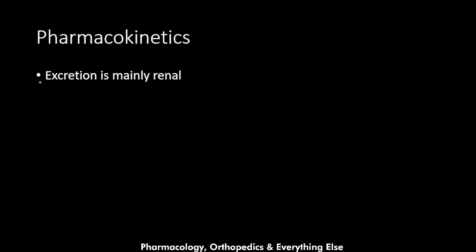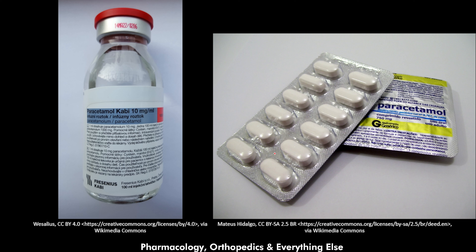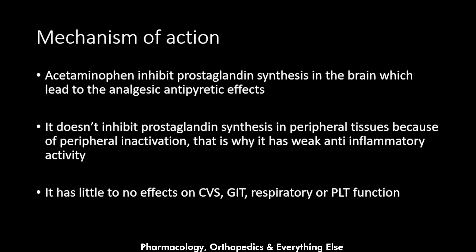Excretion of acetaminophen is mainly renal, through urine. We have pictures showing the different formulations — oral formula on the right and the intravenous vial on the left. Now for the mechanism of action: acetaminophen inhibits prostaglandin synthesis in the brain. It crosses the blood-brain barrier and inhibits prostaglandin synthesis there, which gives us the analgesic and antipyretic effects.